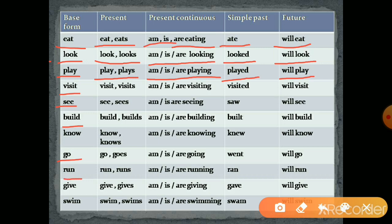Verb 'run': run/runs; am running, is running, are running; ran; will run. Verb 'give': give/gives; am giving, is giving, are giving; gave; will give. Verb 'swim': swim/swims; am swimming, is swimming, are swimming; swam; will swim.